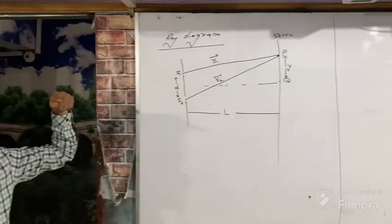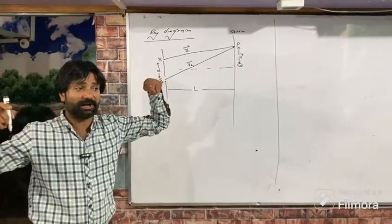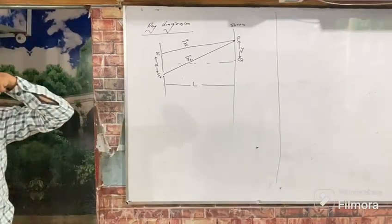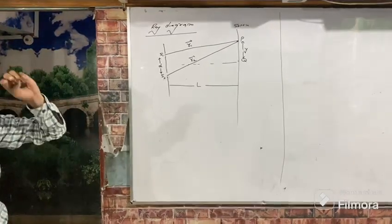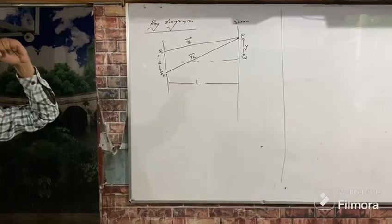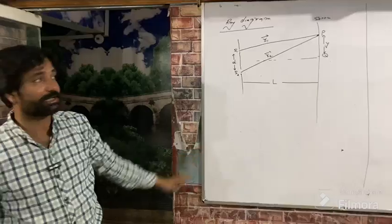We remember the path difference. There should be a path difference. If path difference is zero... if the path is zero, the path difference is between the rays. This happens to be the path difference.